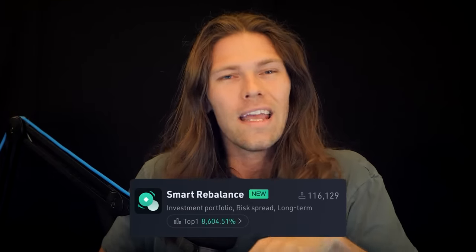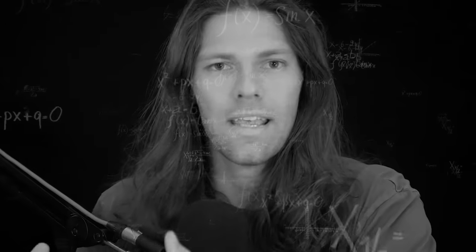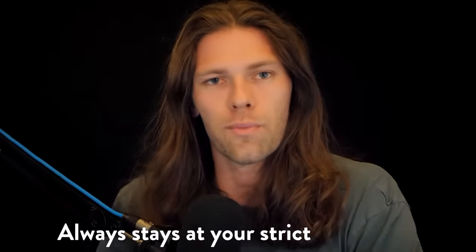Next is the Smart Rebalance bot. We've all had a coin shoot up in price, doubling its weight in our portfolio, and started thinking: should I take some profits? Maybe sell half and put it into my other coins? The smart rebalance bot allows you to designate a percentage of your portfolio to a selection of cryptos and then automatically rebalances so it always stays at your strict parameters. So if you want your portfolio to always be 25% Bitcoin, you can set it and forget it.